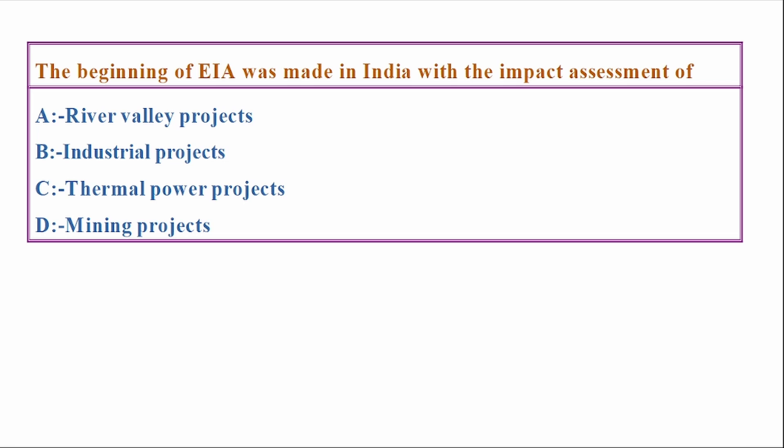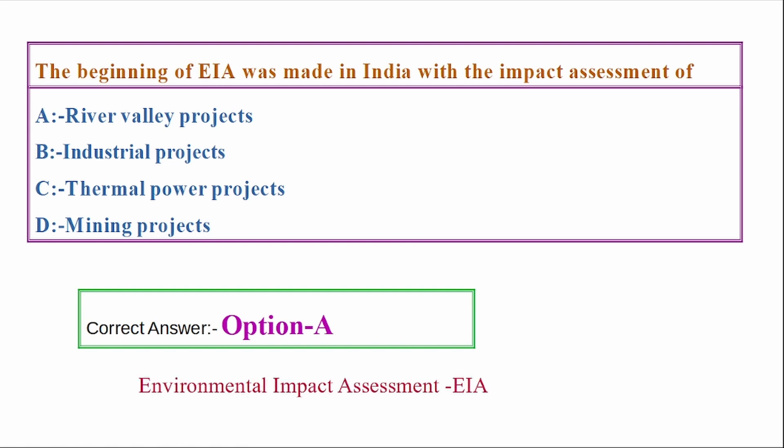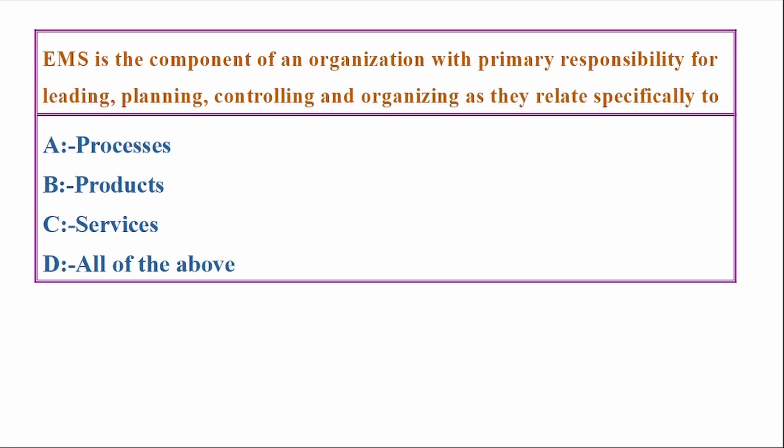The beginning of EIA was made in India with the impact assessment of: Options - river valley projects, industrial projects, thermal power projects, mining projects. Answer: Option A, river valley projects. EIA - Environmental Impact Assessment. The beginning of environmental impact assessment EIA was made in India with the impact assessment of river valley projects.